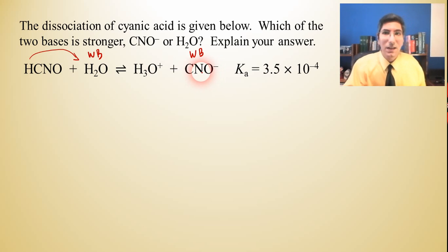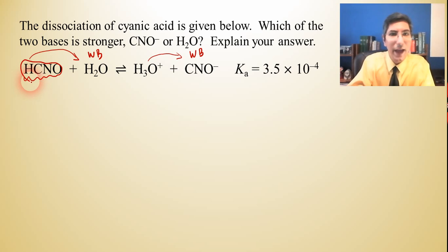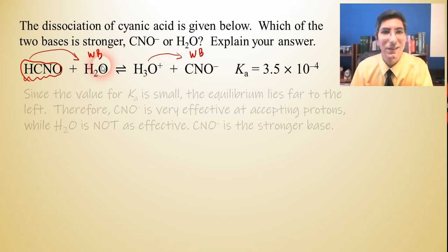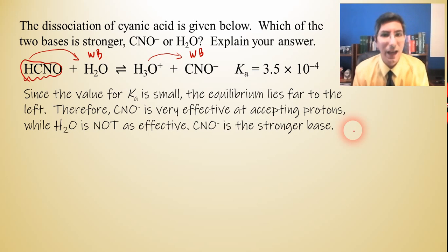But what about the cyanate ion? Is it very good at accepting H pluses from the hydronium? Yes, it is. Yeah, that's why we have so much of this stuff, right? We have a lot of that. We don't have a whole lot of these products over here. So, if I were answering this question, I'd say, you know, cyanic acid is a weak acid. And so, as a result, the cyanate ion is going to be very weak. It's just not very good. I'm sorry. The cyanate ion is going to be a very good base in this case, at least much better than water is. And let's see what the answer is. Yeah, since the value for Ka is small, the equilibrium lies far to the left. Therefore, cyanate is very effective at accepting protons while water is not as effective. So, cyanate is the stronger base.